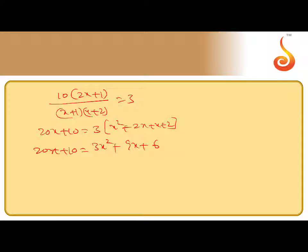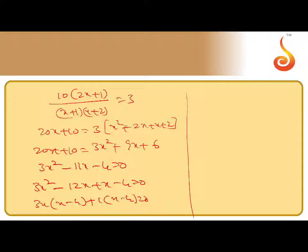Bring everything to one side: 3x squared minus 11x minus 4 equals 0. Factorization gives 3x squared minus 12x plus x minus 4 equals 0. Taking common: 3x common x minus 4 plus 1 common x minus 4 equals 0. Therefore, 3x plus 1 into x minus 4 equals 0.